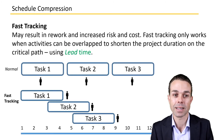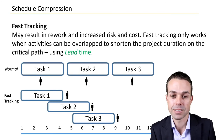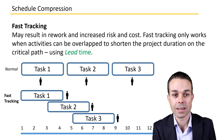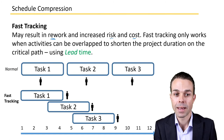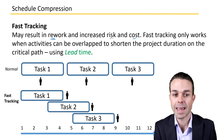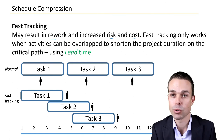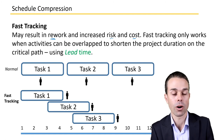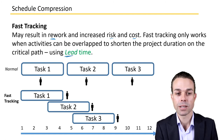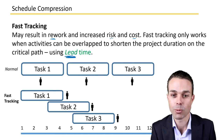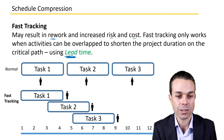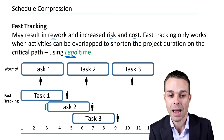The other technique is fast tracking, where we're performing tasks in parallel. This might result in rework and increased risk and cost as well. It only works when activities can be overlapped to happen at the same time to shorten the project duration on the critical path. We're using any available lead time to perform those tasks in parallel.